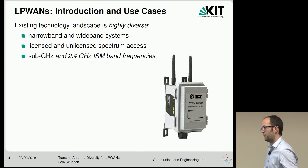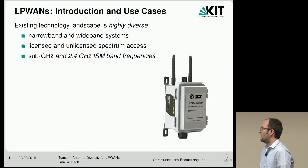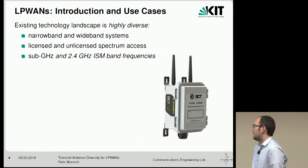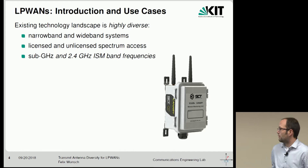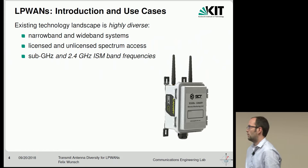The technology landscape is really diverse, with many different approaches to basically the same problem. We have very narrow band systems — you might have heard of Sigfox — wide band systems like LoRa, licensed spectrum access as in the case of narrowband IoT, or unlicensed spectrum access which is what basically everyone else does. In terms of frequencies, most use sub-gigahertz frequencies, which makes sense because lower frequencies give you lower propagation loss and cover large distances.